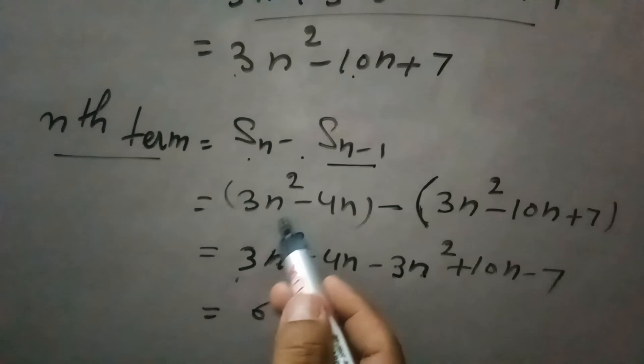With this minus sign, opening the bracket: 3n² minus 4n, and minus 3n² plus 10n minus 7.